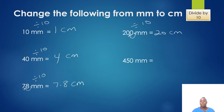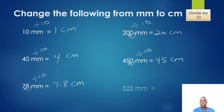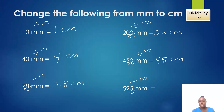I have 450 millimeters and I would like to change it to centimeters. All I have to do is divide by 10 — shift my decimal point once to the left — giving me 45 centimeters. Next, 525 millimeters to centimeters: all I have to do is divide by 10, shift my decimal point once to the left, and I'm getting 52.5 centimeters.